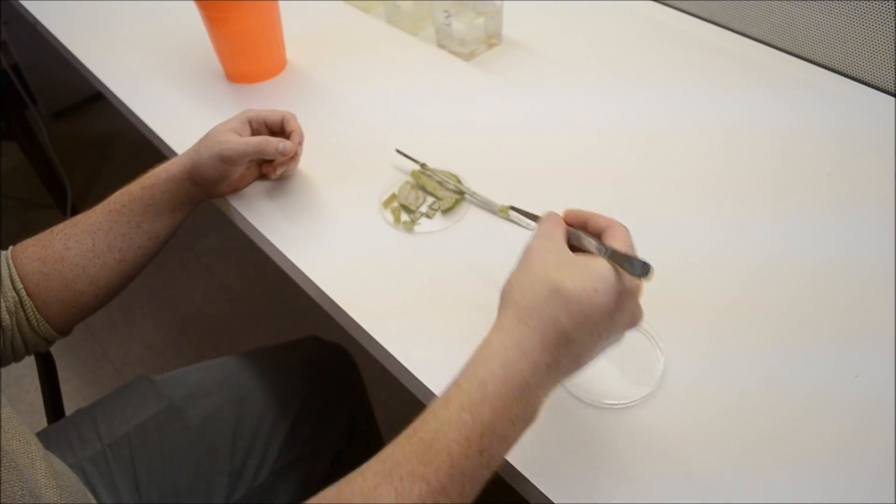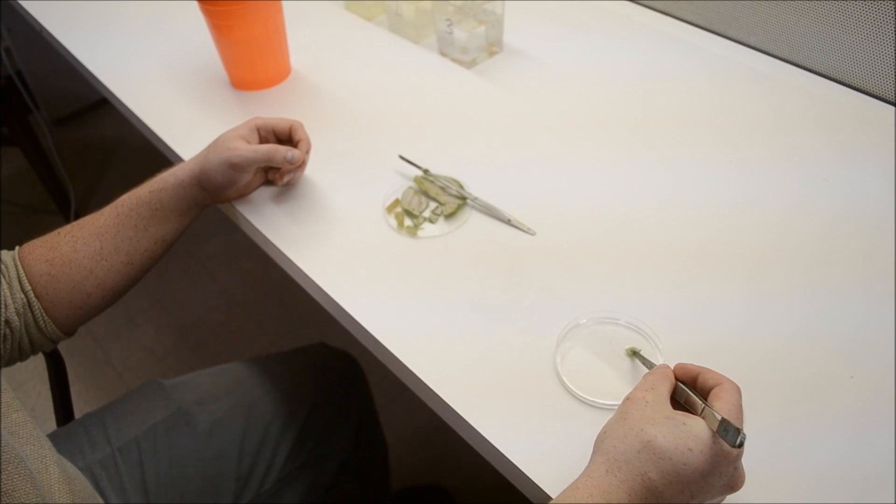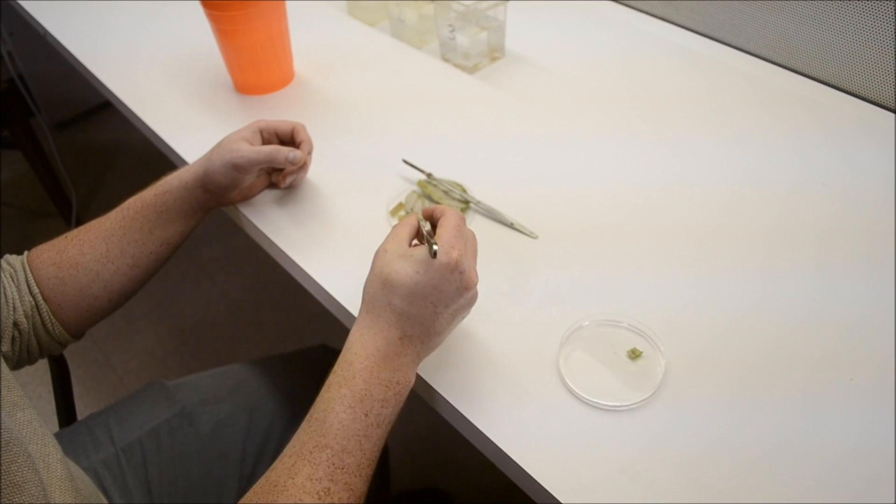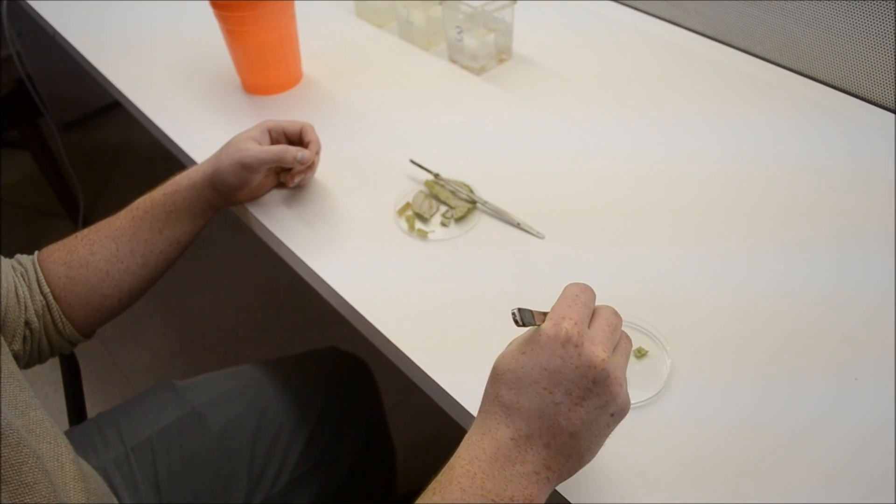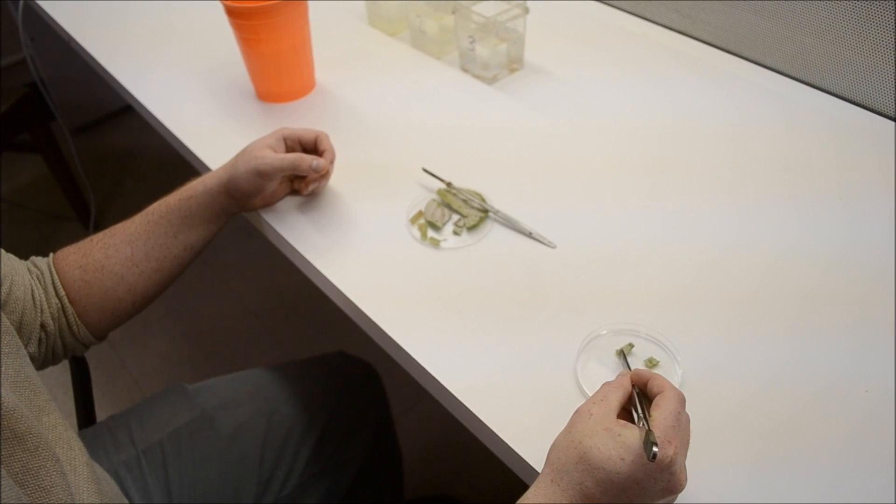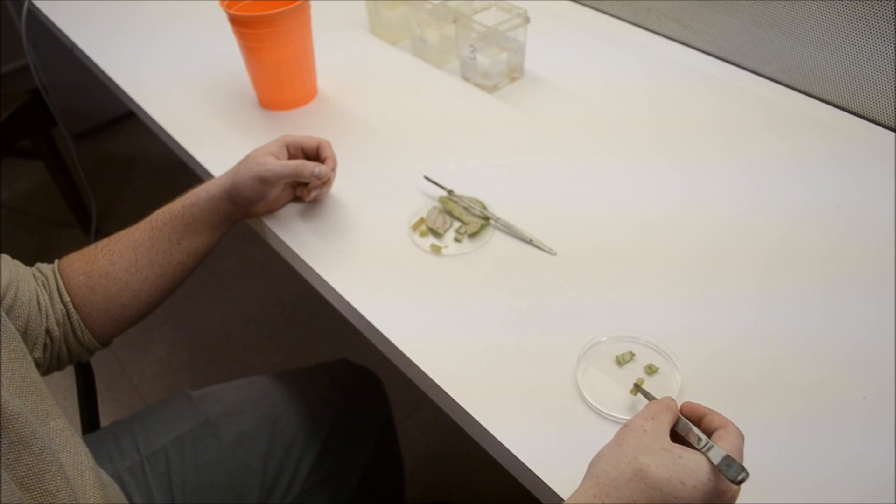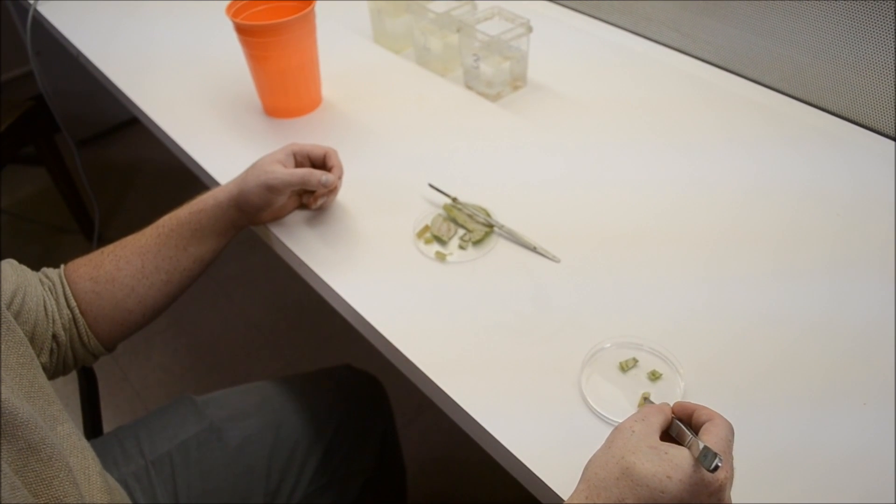For the leaf explant, place each section onto the surface of the medium and spread out evenly. For the petioles, make sure to place onto the medium on the sides and spread out evenly across as well. Also, use the sterilized forceps to make sure that each plant piece has solid contact with the medium.